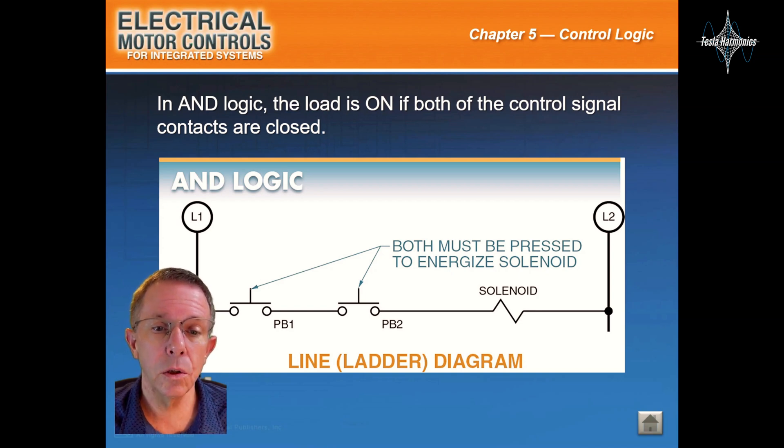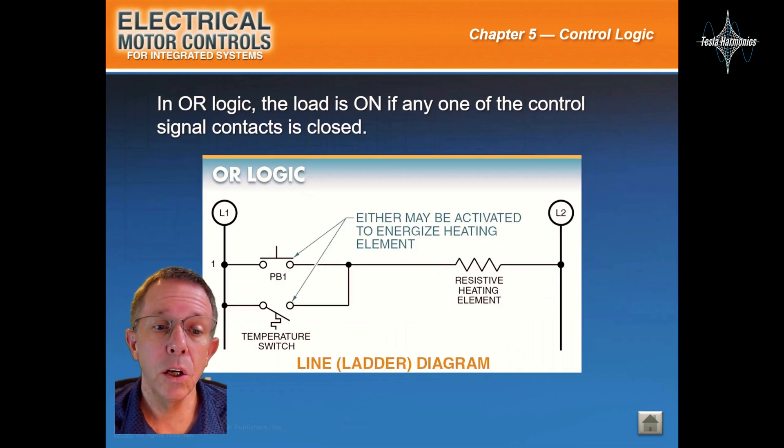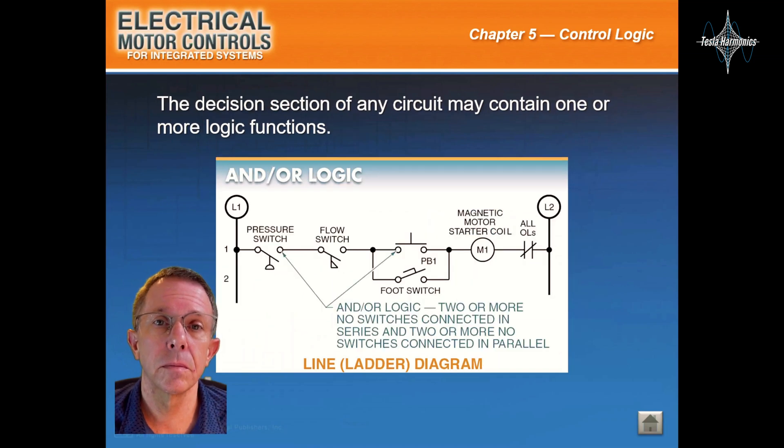In AND logic, the load is on if both the control signal contacts are closed. In OR logic, the load is on if any one of the control signal contacts is closed. The decision section of any circuit may contain one or more logic functions.